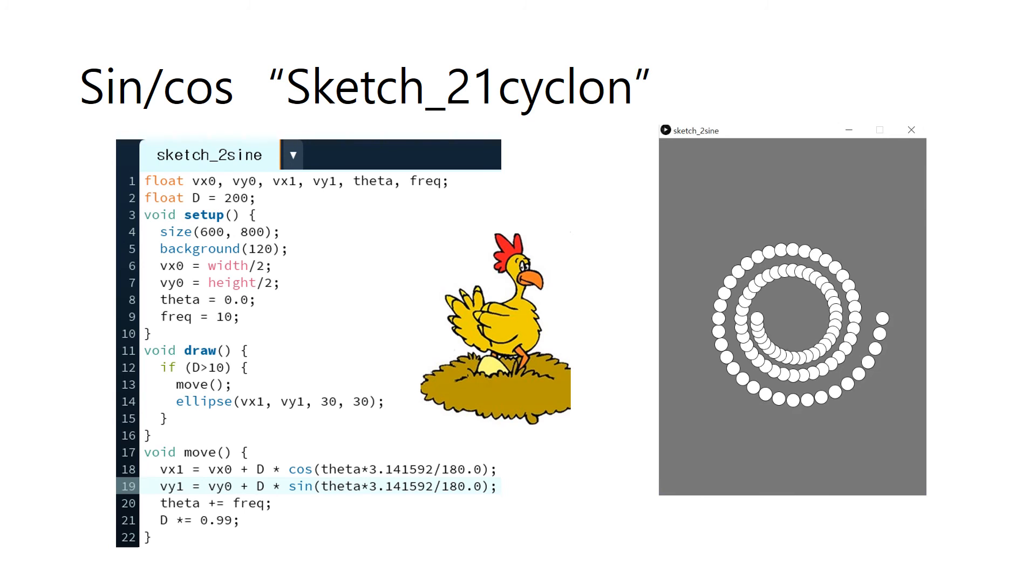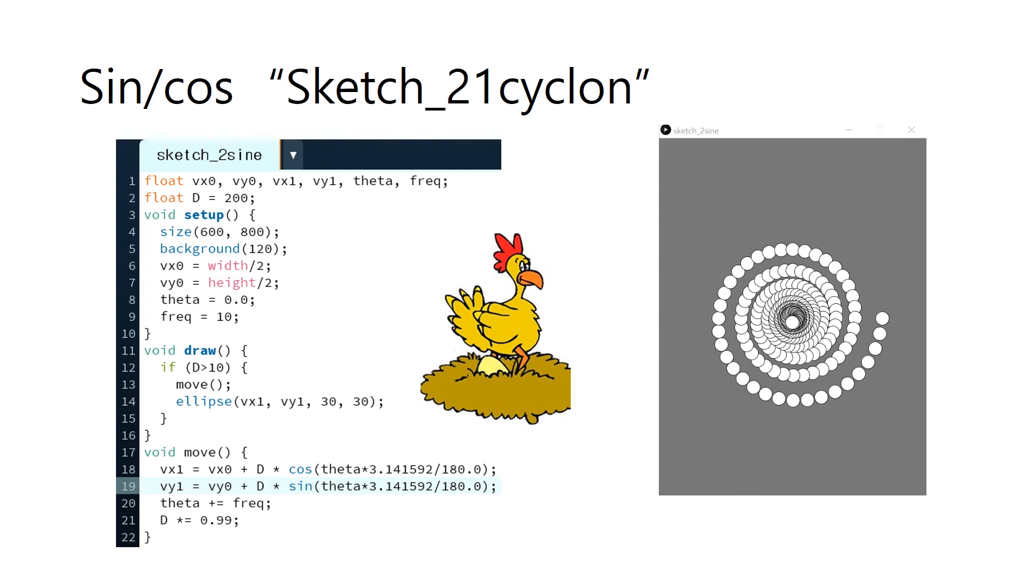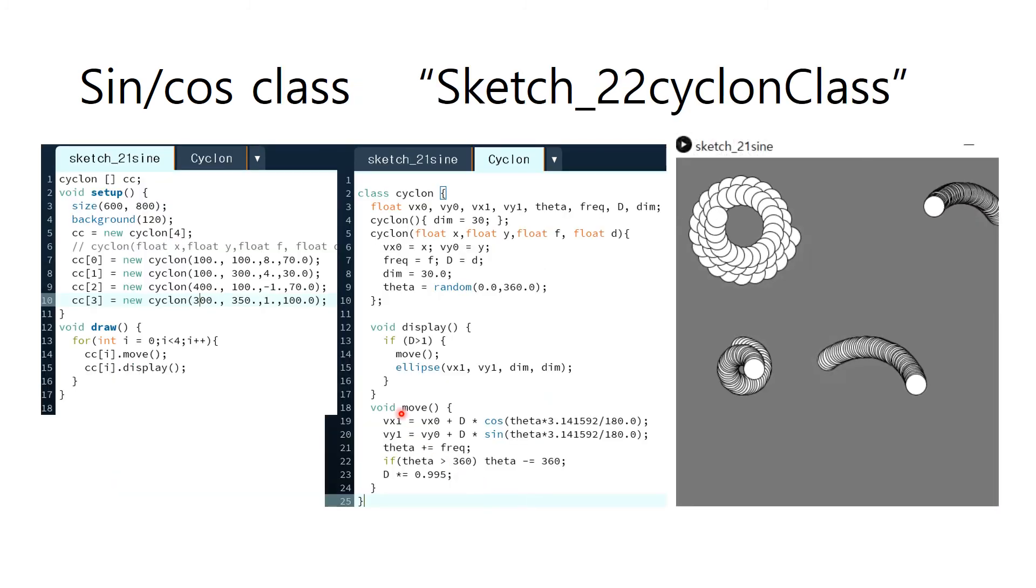This program is a program which draws a cyclone by using sine and cosine values and changing radius over time. It looks like this. And there is only one cyclone in this case. By making a class of cyclone, you can make an array of four objects of cyclone. And then we can make four different cyclones with different location and different velocity and radius. By using the draw function here, we can move and display.